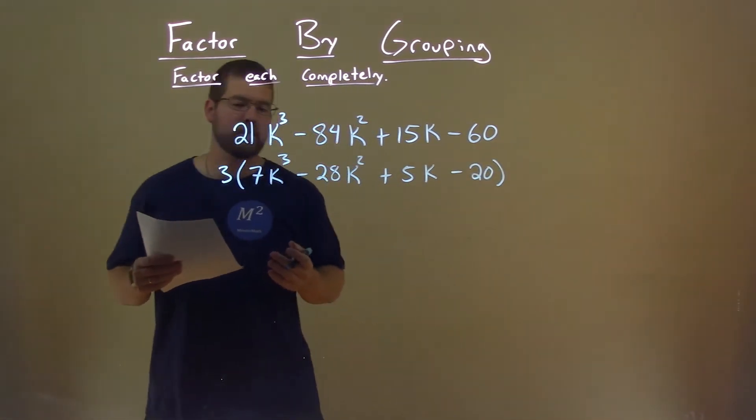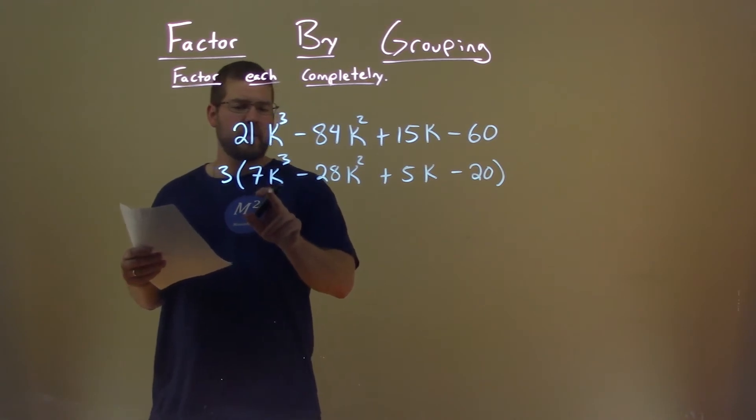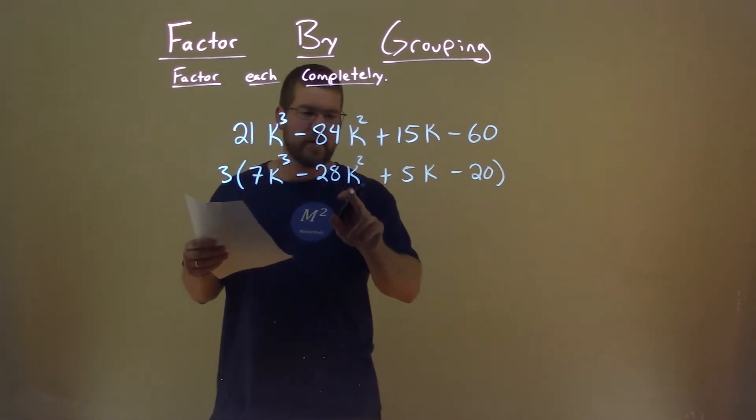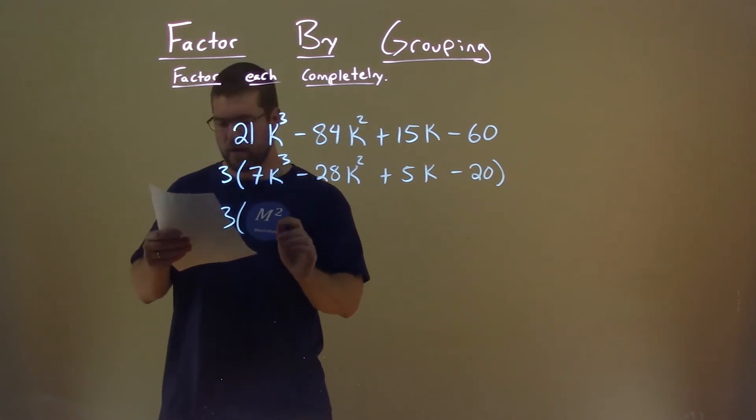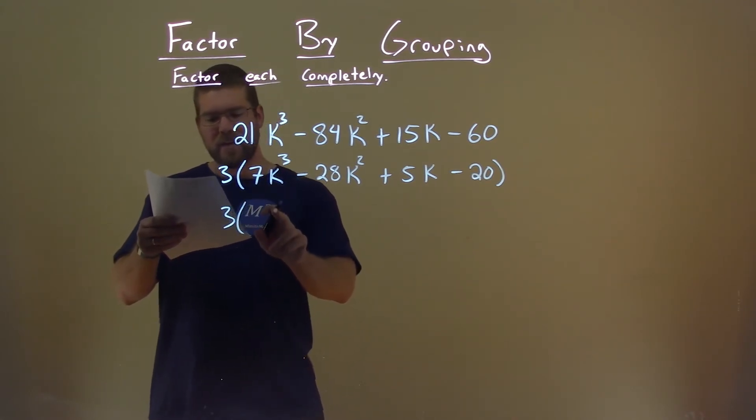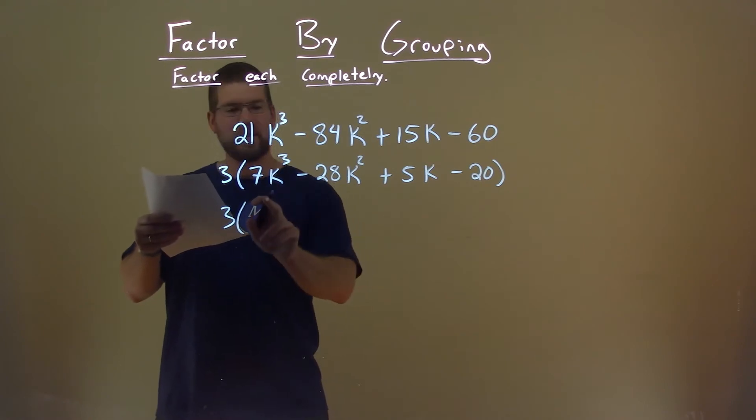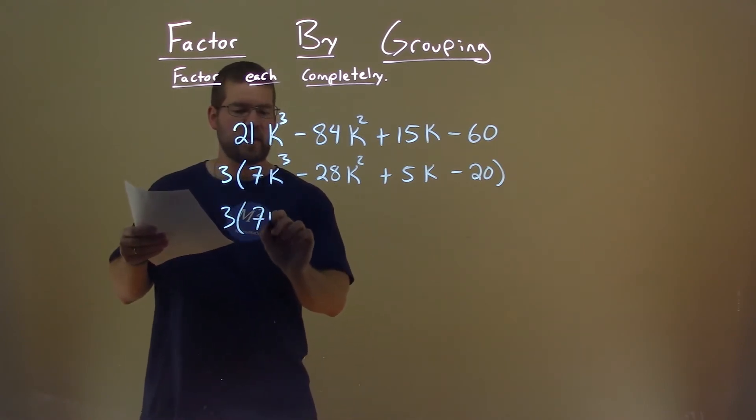So where do we go from here? Well, I notice in the 7k³ and 28k², we can pull out a common factor here. So 3 still comes down, but we see a 7k² is in both of these. So if we pull out a 7k²,